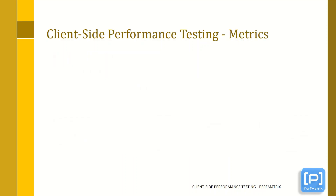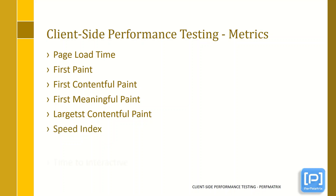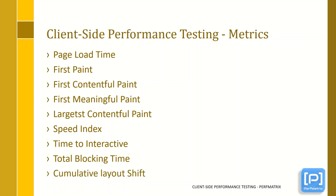The metrics used to measure the performance of a website at the user end include: page load time, first paint, first contentful paint (FCP), first meaningful paint, largest contentful paint (LCP), speed index, time to interactive (TTI), total blocking time (TBT), and cumulative layout shift (CLS). Among these, FCP, LCP, speed index, TTI, TBT, and CLS are the most important ones. Future videos will cover what exactly these metrics are and how they are calculated.